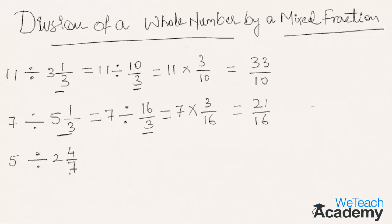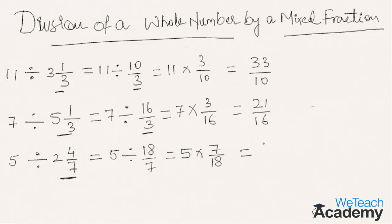Now, let us solve the third example: 5 divided by 2 and 4 by 7. This equals 5 divided by the improper form — 7 2's are 14 plus 4, that is 18 by 7. This equals 5 multiplied by the reciprocal of 18 by 7, that is 7 by 18, which equals 5 7's are 35. The denominator always remains the same, that is 18. Hence, 35 by 18 is the result for 5 divided by 2 and 4 by 7.